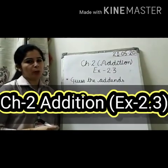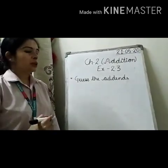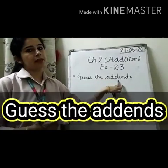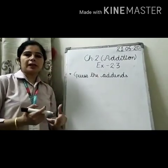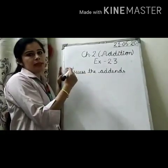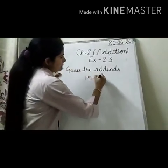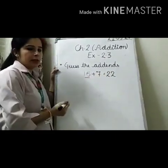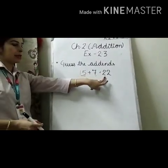Hello students, hope you are doing well. Today we are going to do the topic 'Guess the Addends.' Before starting, I want to revise what an addend is. An addend is a number that is being added. For example, 15 plus 7 equals 22 — so 15 is addend 1, 7 is addend 2, and 22 is the sum.